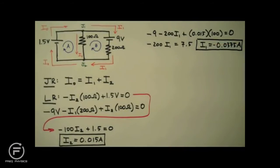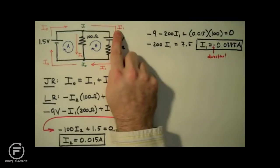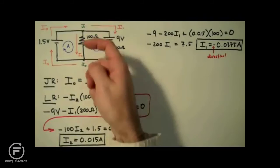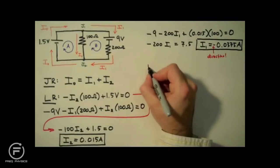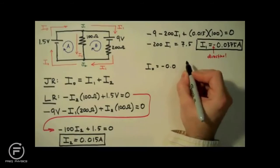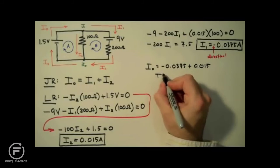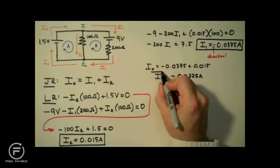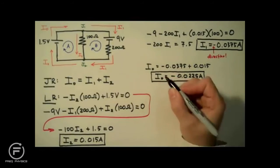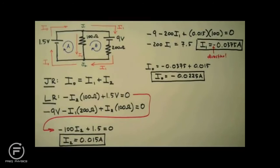So what does this negative sign tell us? It tells us that the direction we chose for I1 is the wrong direction. Remember how we picked it arbitrarily at the beginning of the problem? Here's where we find out that the actual direction of positive charge flow is the other way — no harm, no foul; now we know the correct direction. Taking I1 and I2 and plugging them into the junction rule to determine I0: I0 equals negative 0.0375 plus 0.015, giving I0 equals negative 0.0225 amps, or negative 22.5 milliamps. Again, the negative sign tells us the assigned direction is incorrect — the current is actually moving the other way.